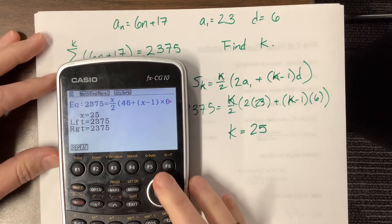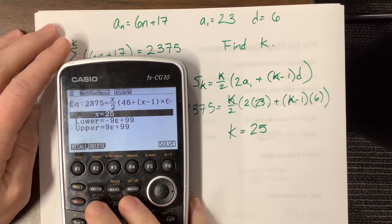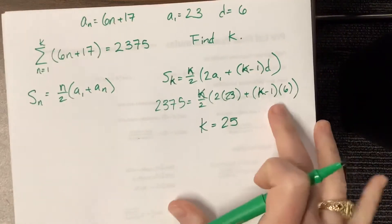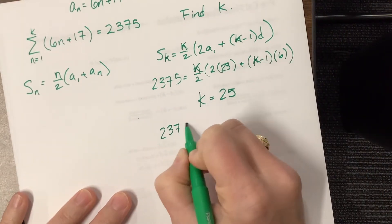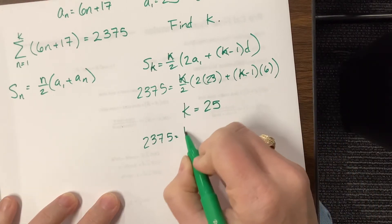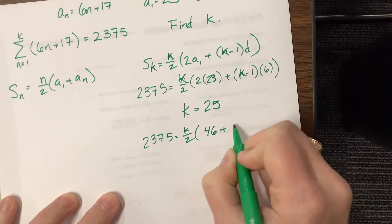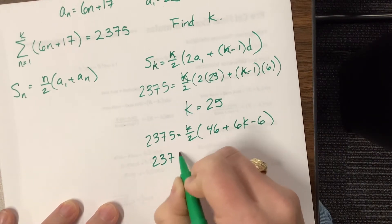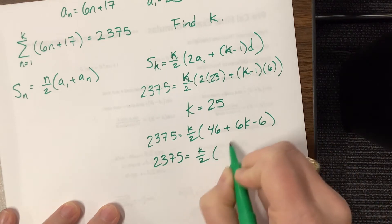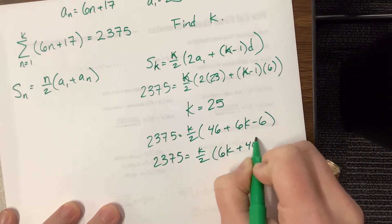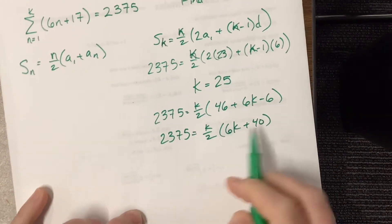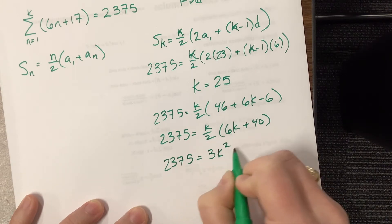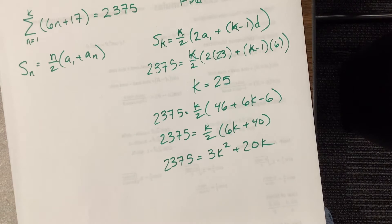I would expect to get more than one answer. Because, the other option is to clean this mess up a little bit more. And say that we have, this is equal to, this is k over 2 times 46 plus 6k minus 6. So we can kind of clean this up. And that's 6k plus 40. When I notice that those are even, so that's kind of nice. So I could say this is equal to 3k squared plus 20k. And now I have something that's quadratic.